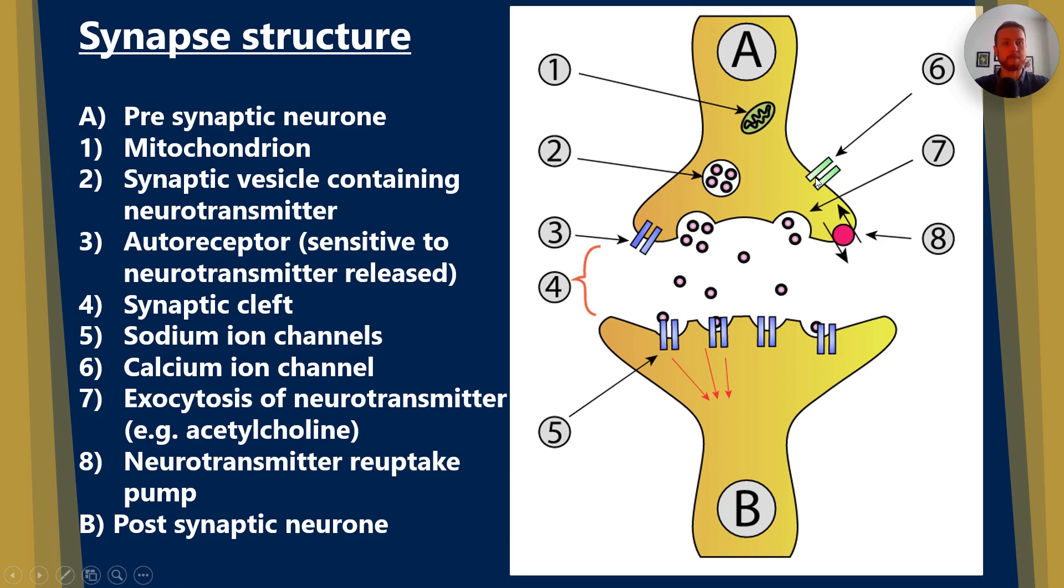Number six, we have our calcium ion channel, where calcium will diffuse in. Ca2+, so calcium ions, will diffuse in and they'll lead to the neurotransmitter's vesicles fusing with the presynaptic membrane. Number seven, we have exocytosis of neurotransmitter. Exo meaning outside, cytosis meaning out of the cell. So we're releasing neurotransmitter outside of the presynaptic neuron.